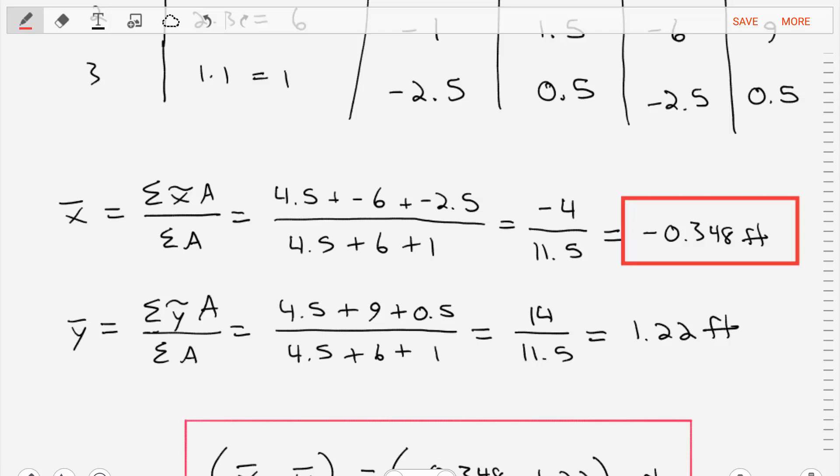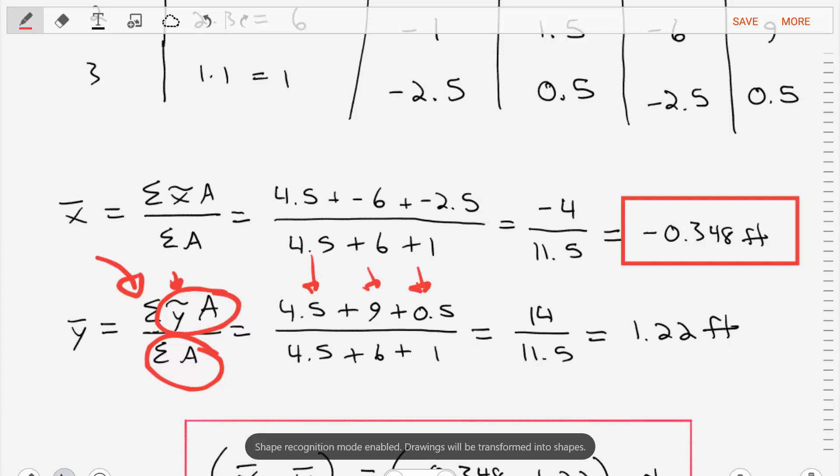Now we'll repeat that process for y bar, for the centroid of the composite body, where that centroid is equal to the sum of y tilde times A over the sum of the areas. So for element 1, element 2, and element 3, we add up their terms and find that y bar is at 1.22 feet.